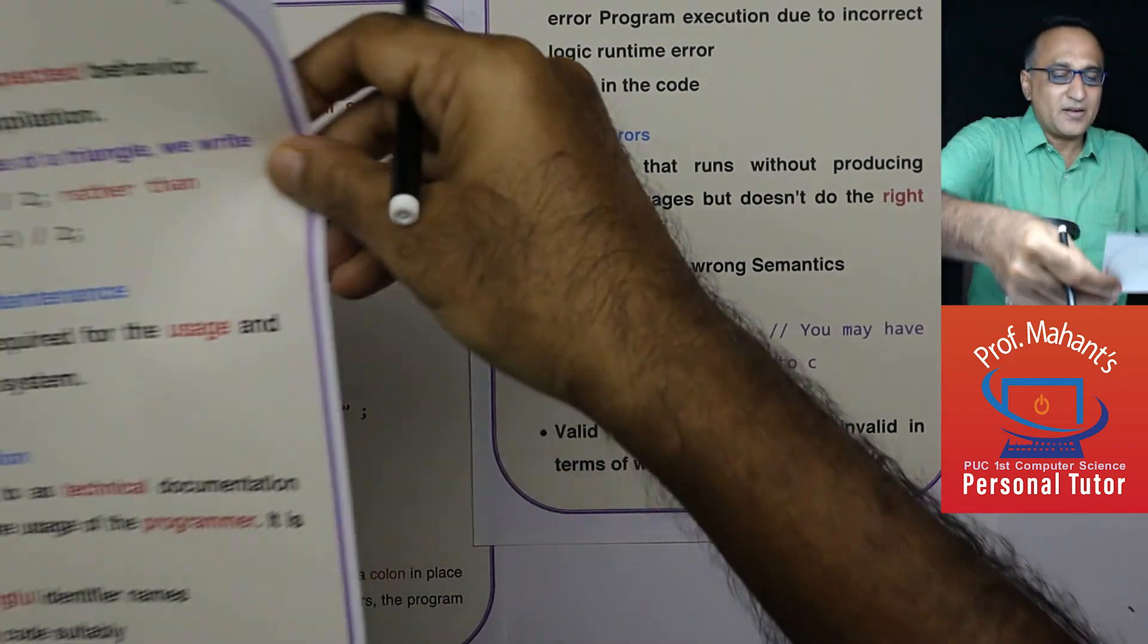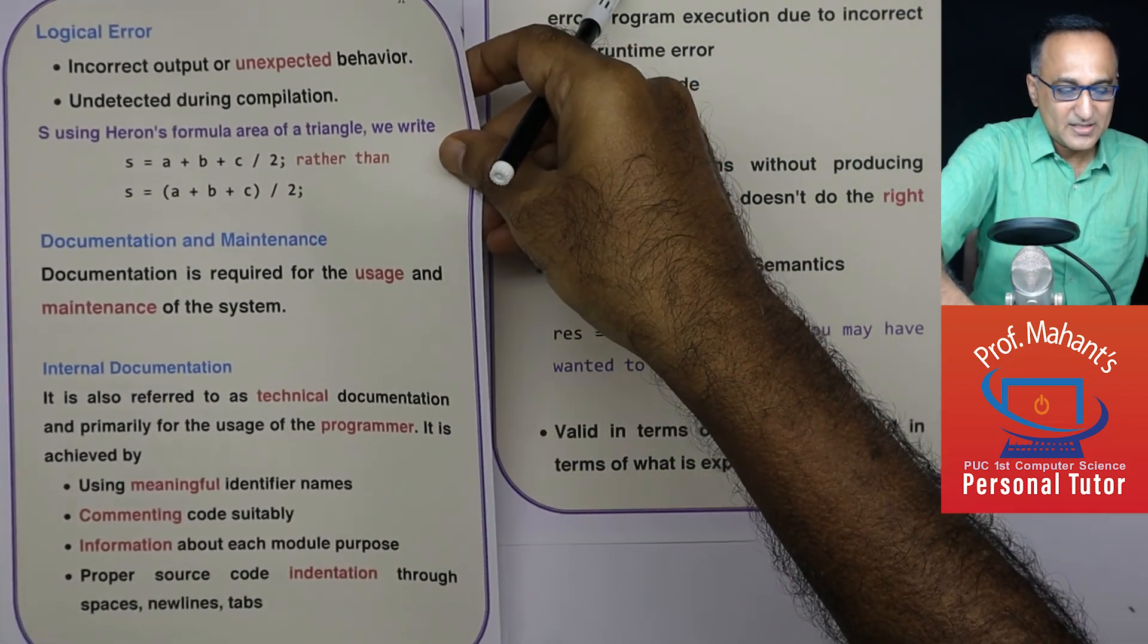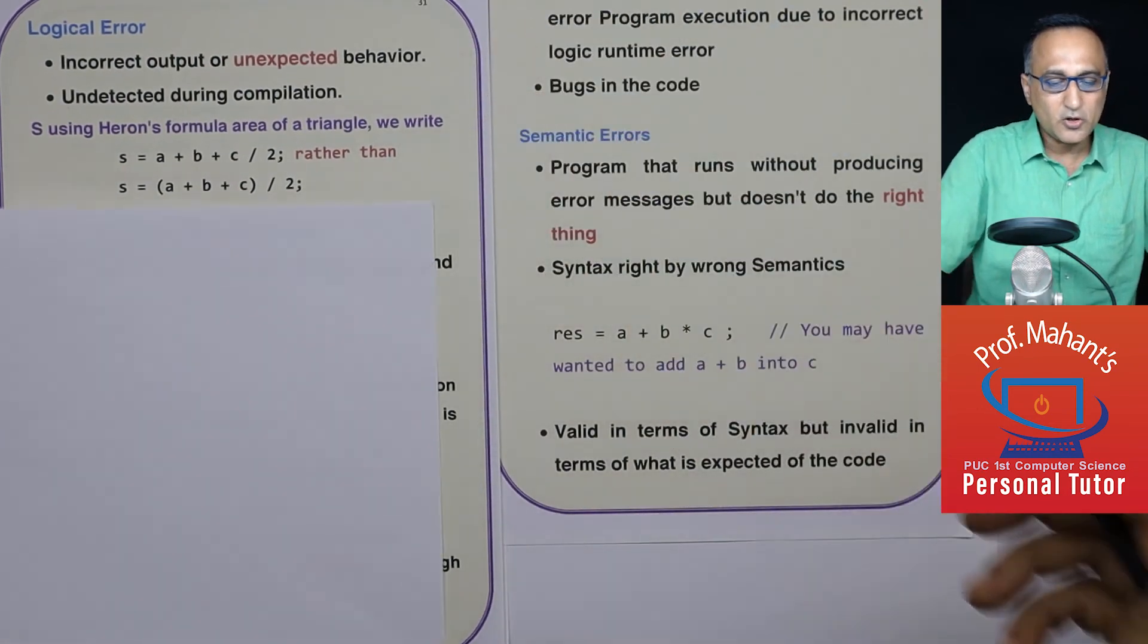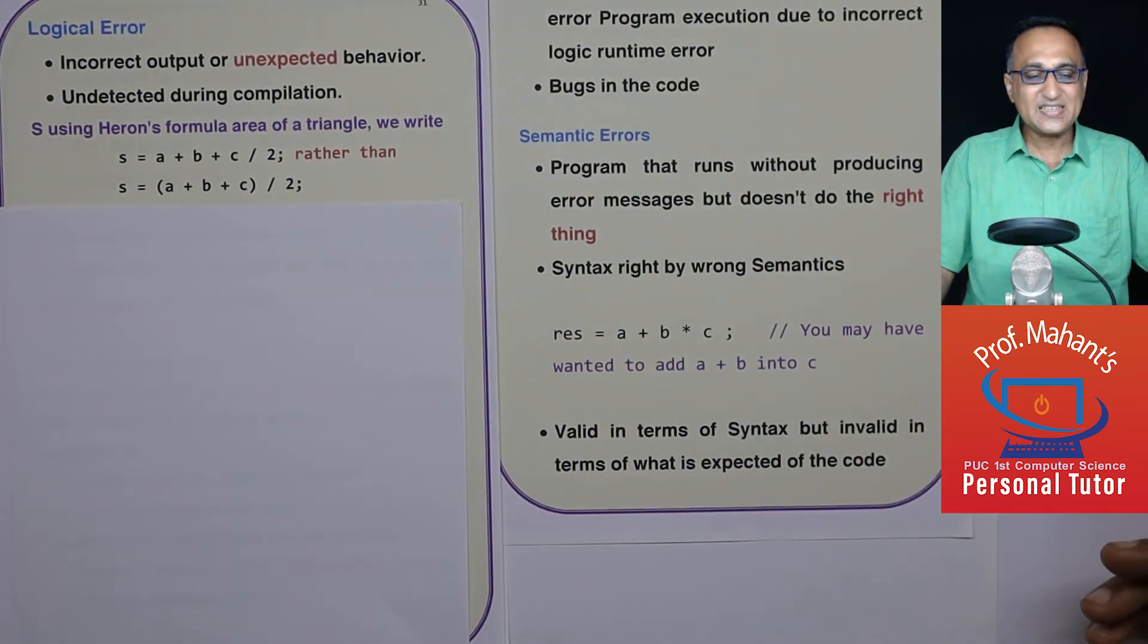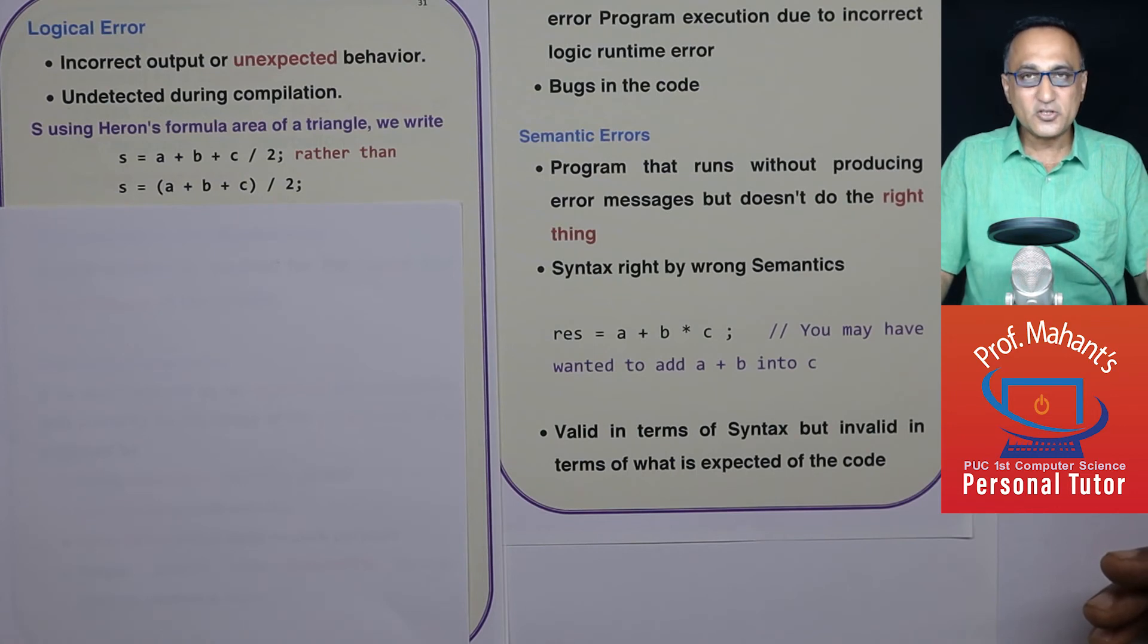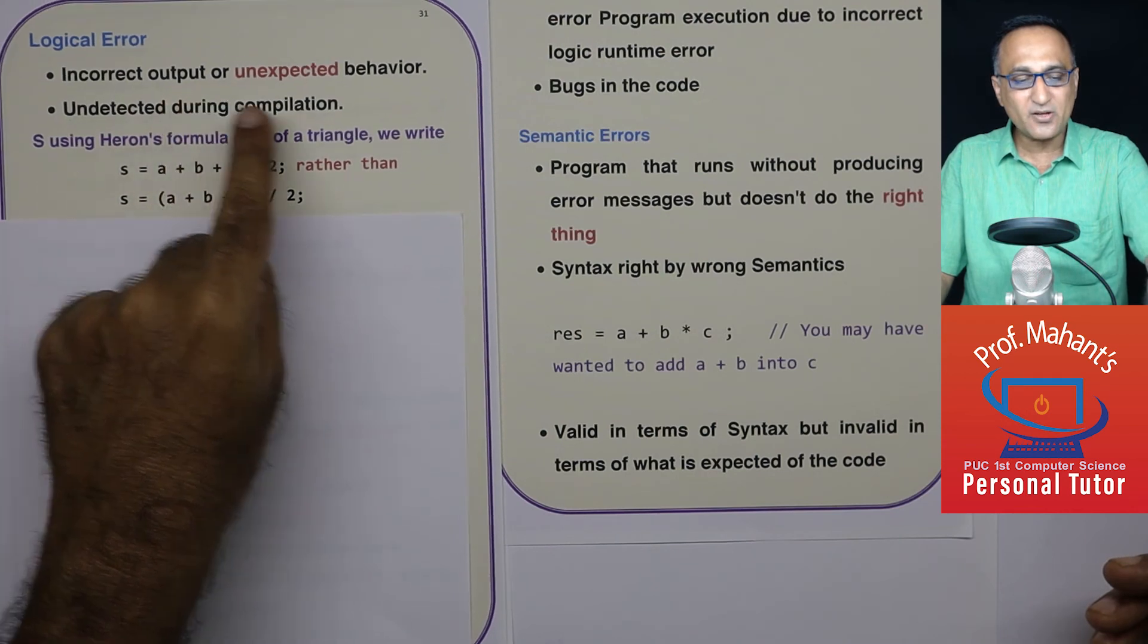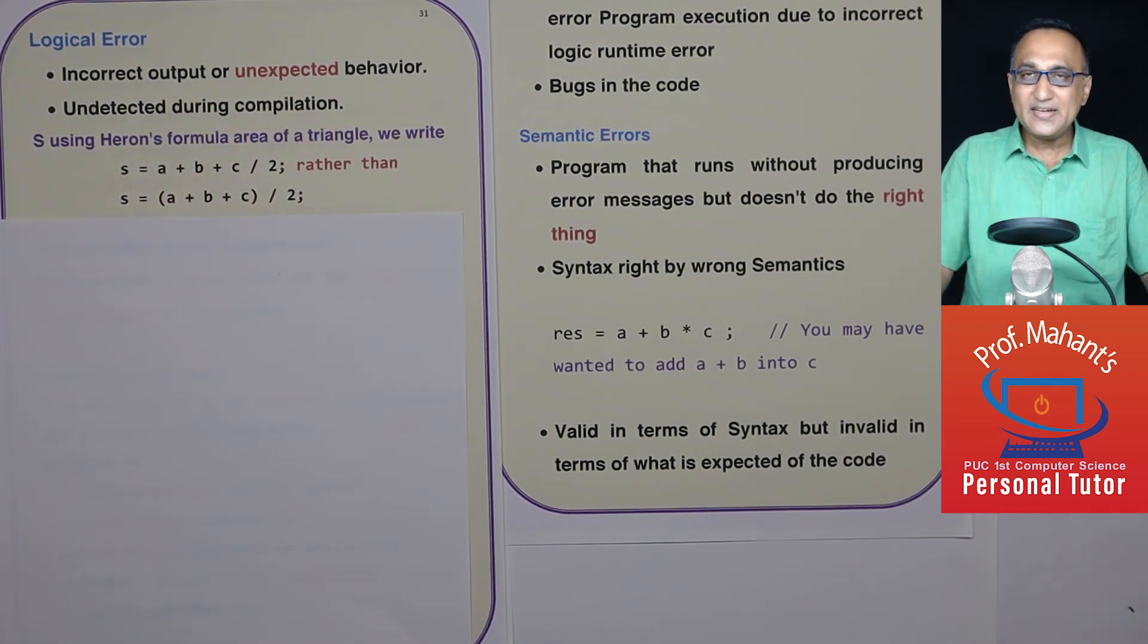Now, the last type of error I am going to talk about is something known as the logical error. So a logical error is an error caused due to incorrect logic in your program. So you will get an incorrect output or an unexpected behavior of your program. It again is not found out during compilation. Only when you run it, you will get the wrong answer.